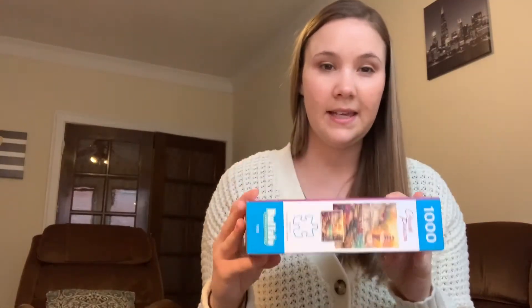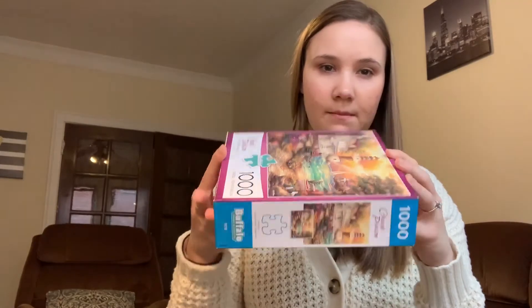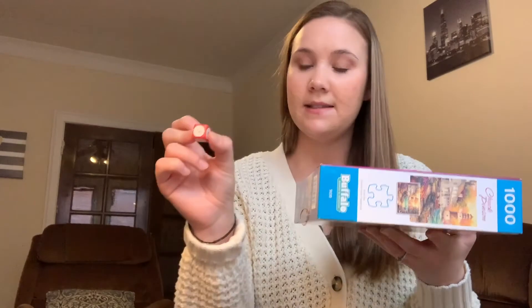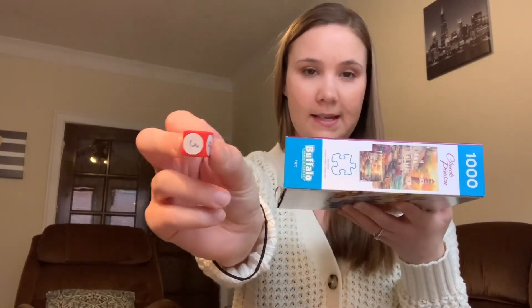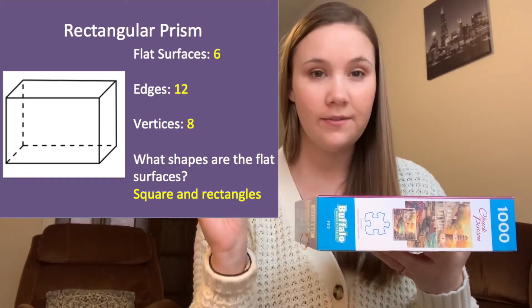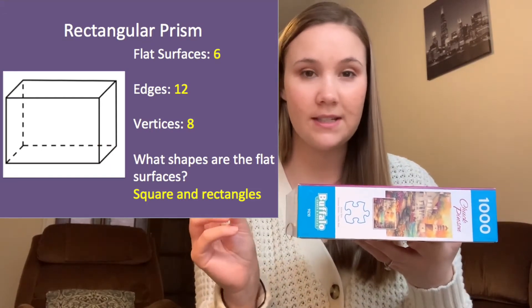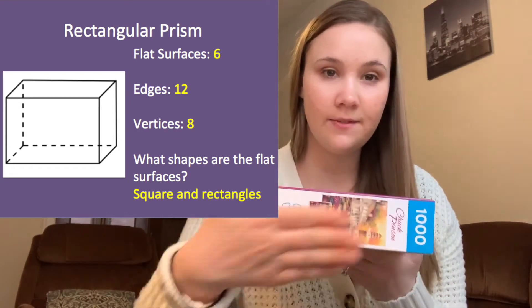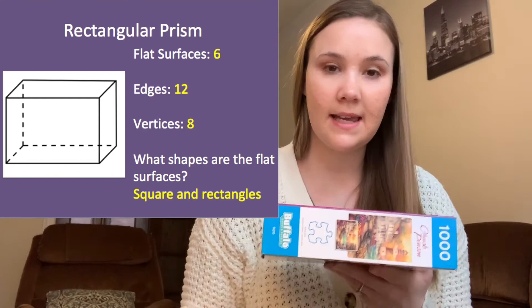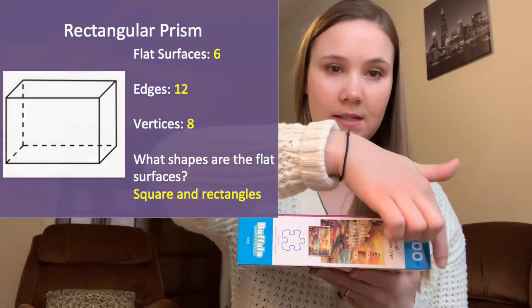Real-life examples of cubes include a cardboard box, an ice cube, and a building block. Now let's look at the rectangular prism. This puzzle box is a rectangular prism — it's very similar to a cube, just stretched out. The number of flat surfaces, edges, and vertices are all the same: six flat surfaces, twelve edges, and eight vertices.